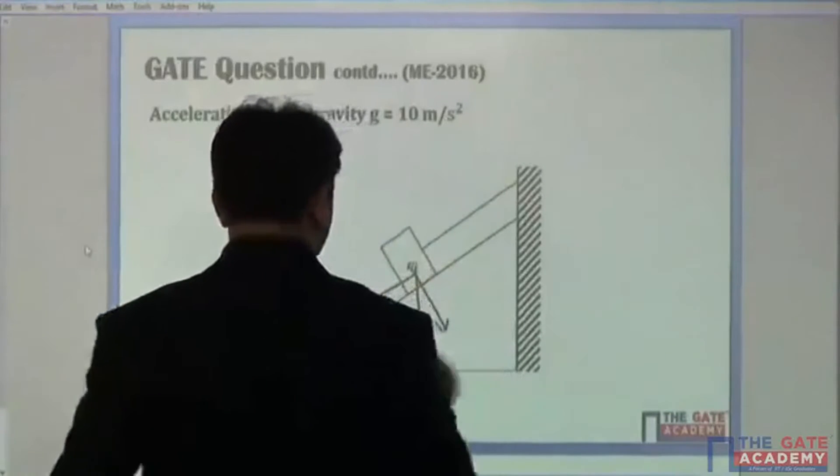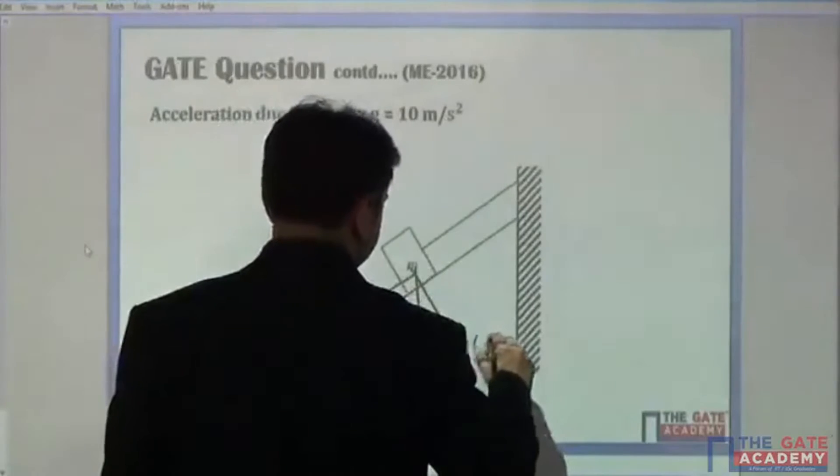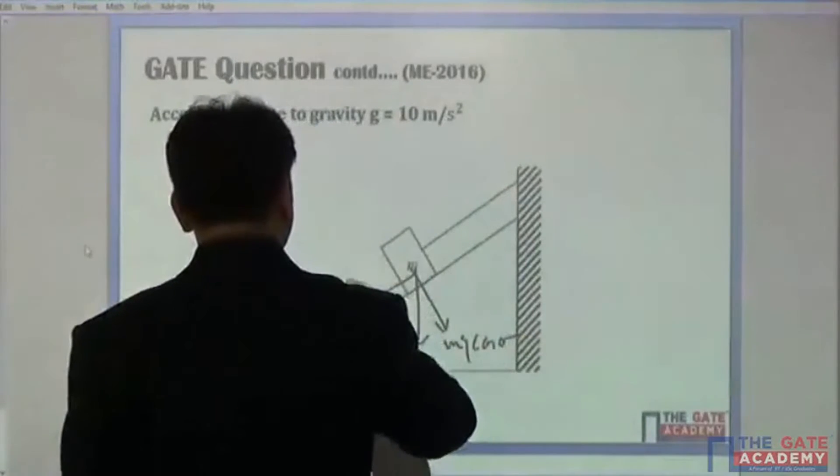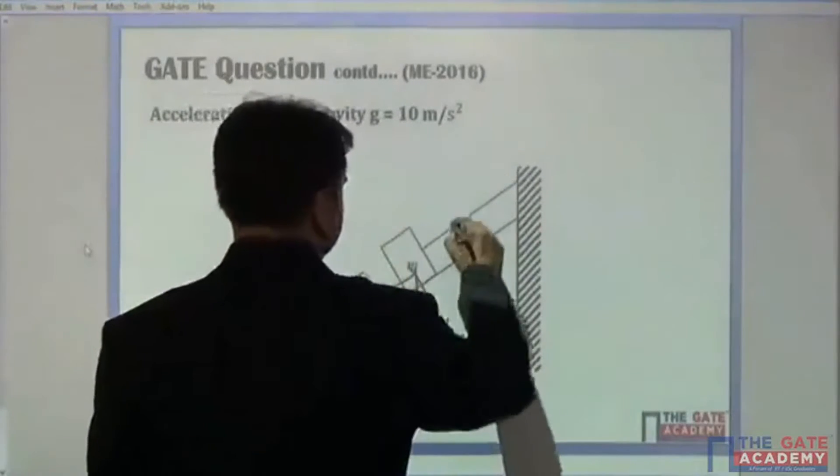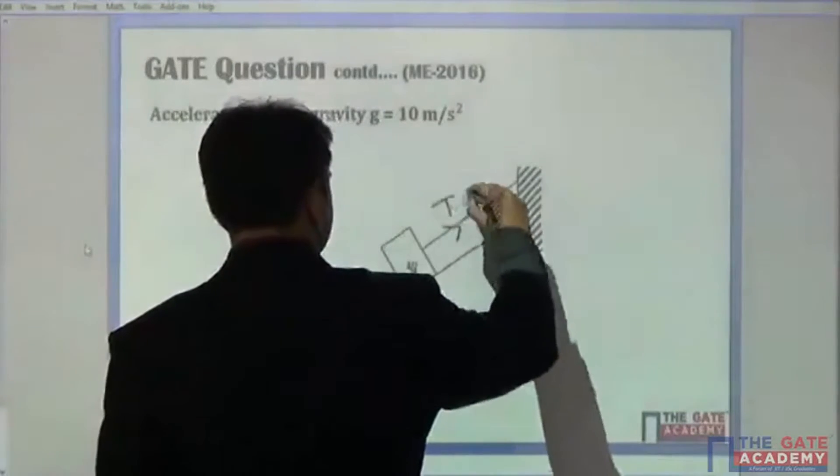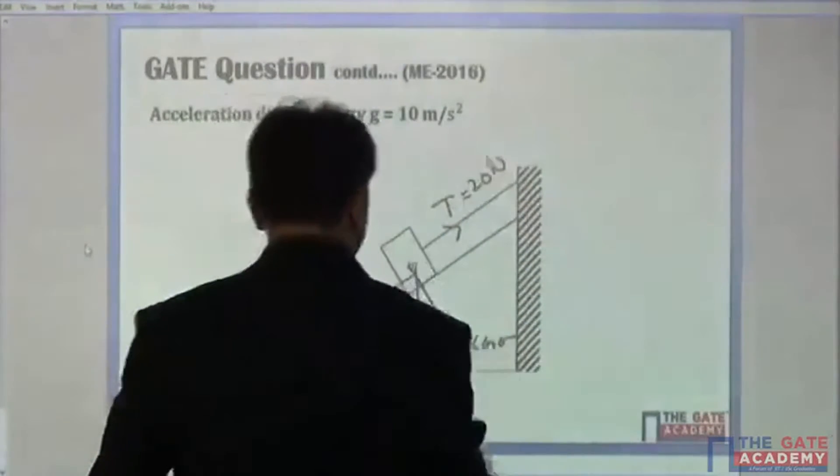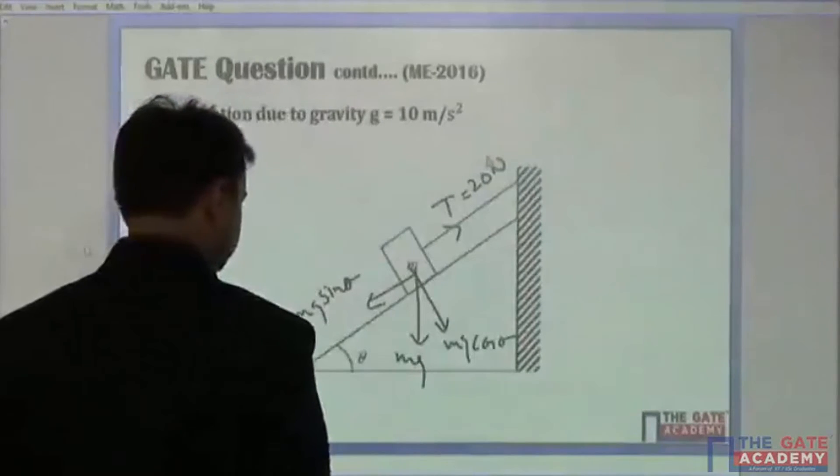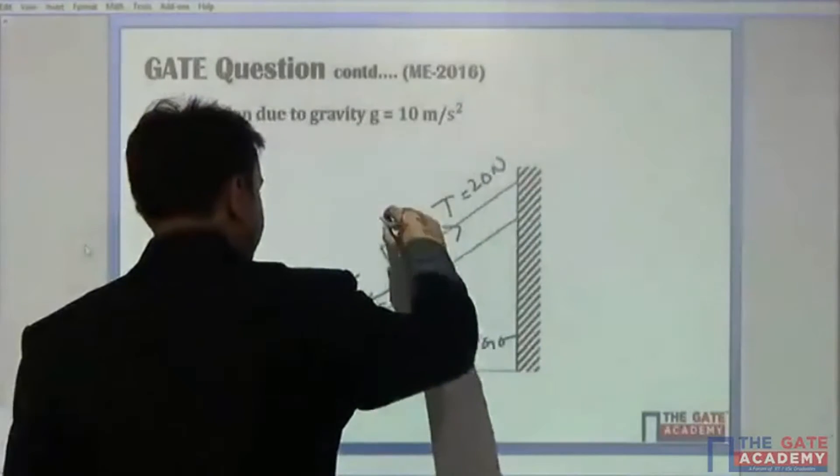It can be resolved into two parts: mg cos theta and mg sin theta. And this is the tension over here which is equal to 20 Newton. And this will be reaction R.